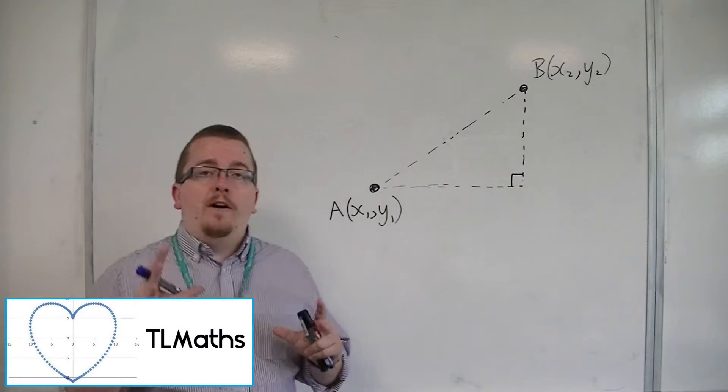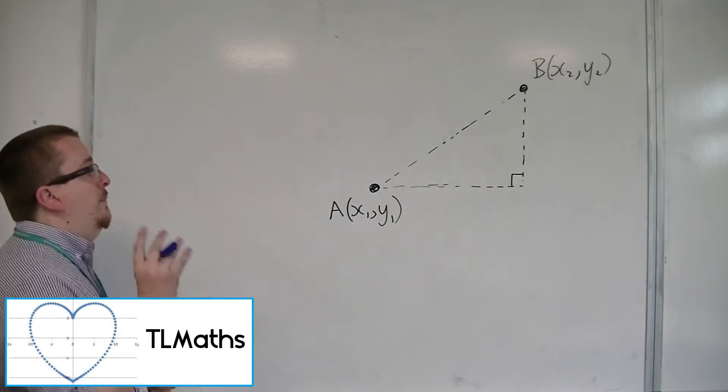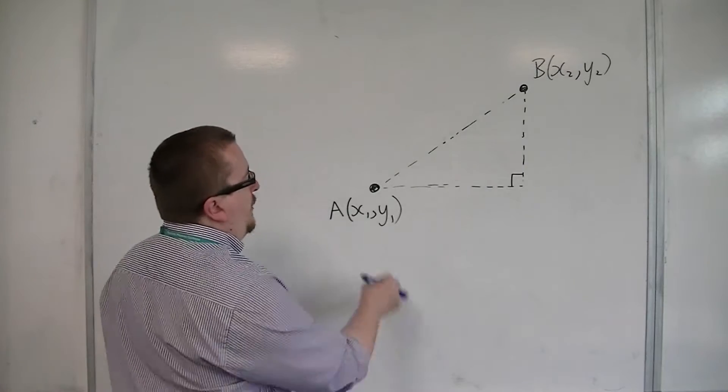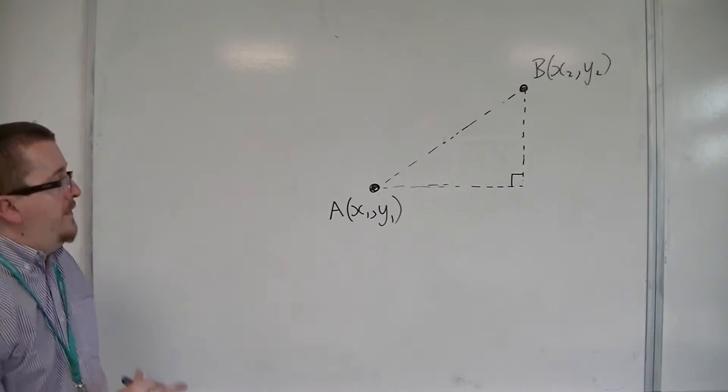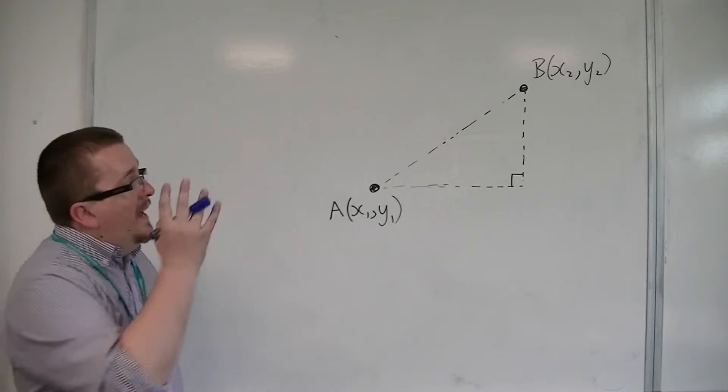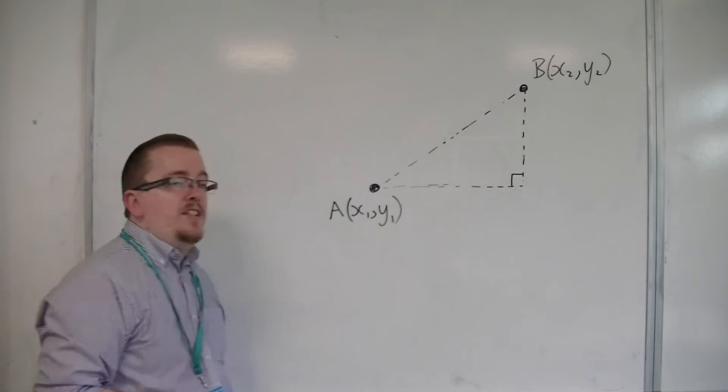In this video, we're going to look at finding the distance between two coordinates. So we have our coordinate A, which I've given the coordinates x1, y1, and B has the coordinates x2, y2.